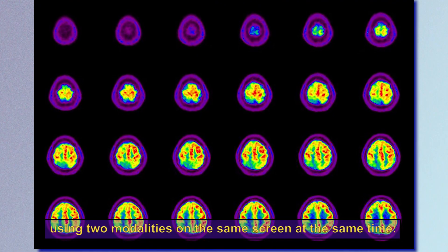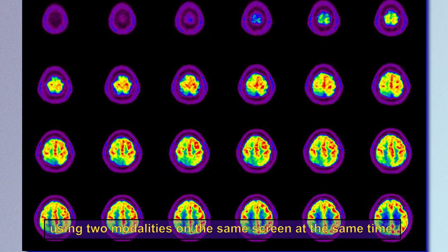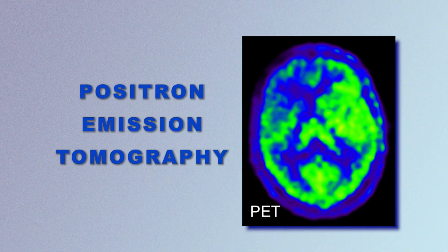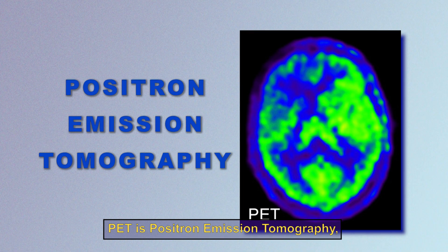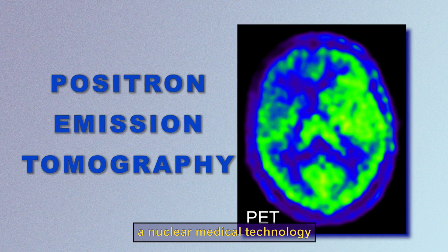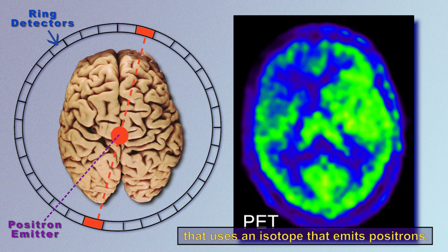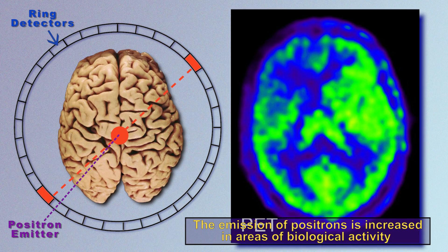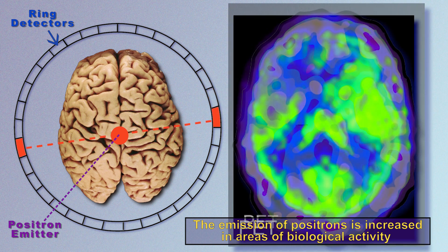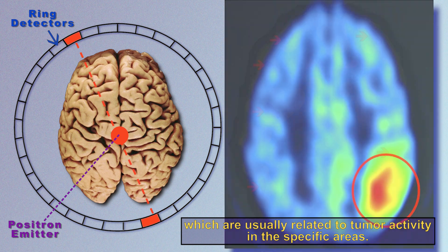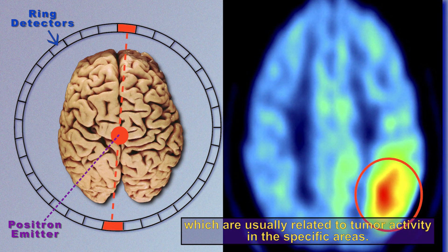PET-CT is a combined medical imaging technology using two modalities simultaneously. PET stands for positron emission tomography, a nuclear medicine technology that uses an isotope emitting positrons. The emission of positrons is increased in areas of high biological activity, which are usually related to tumor activity in specific areas.